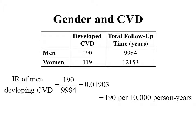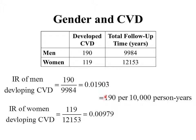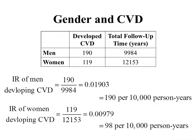To report this number, we move the decimal point four places, giving us 190 cases per 10,000 person-years — we say 'per 10,000' because moving four decimal places corresponds to 1 followed by four zeros. Likewise, the incidence rate for women is 119 divided by 12,153 years, and moving the decimal point four places gives us about 98 per 10,000 person-years.